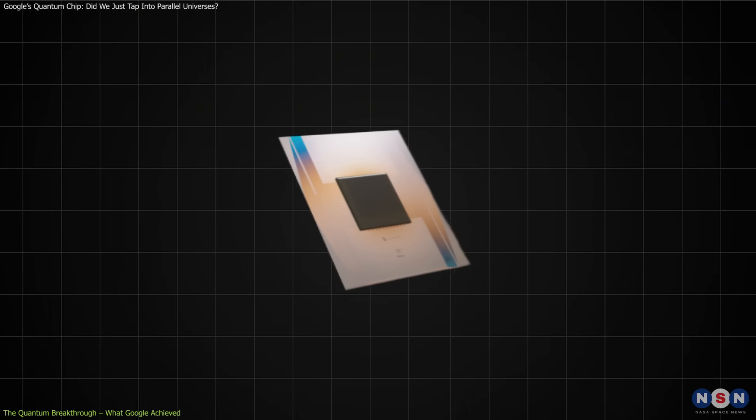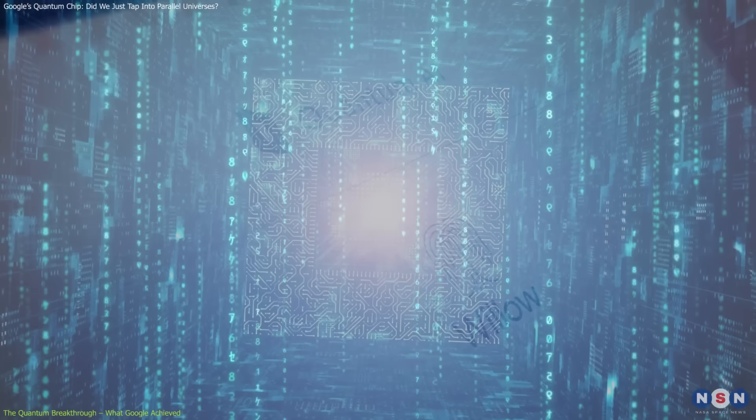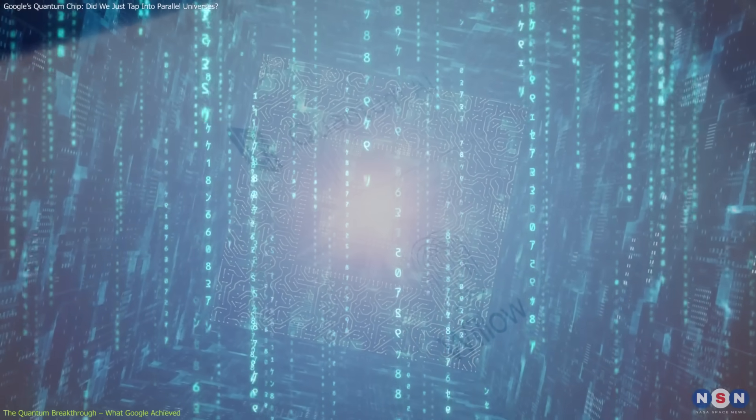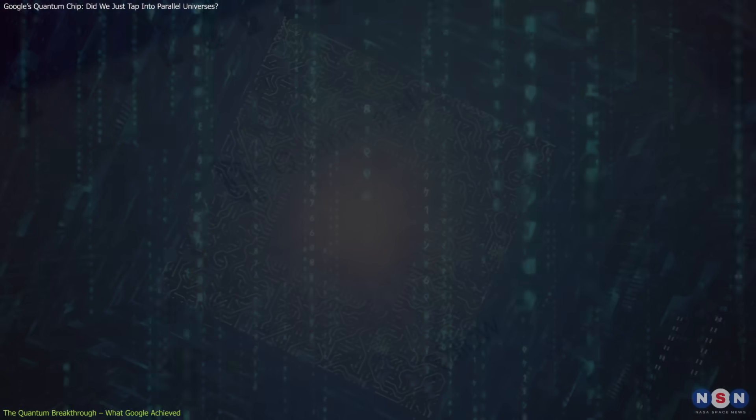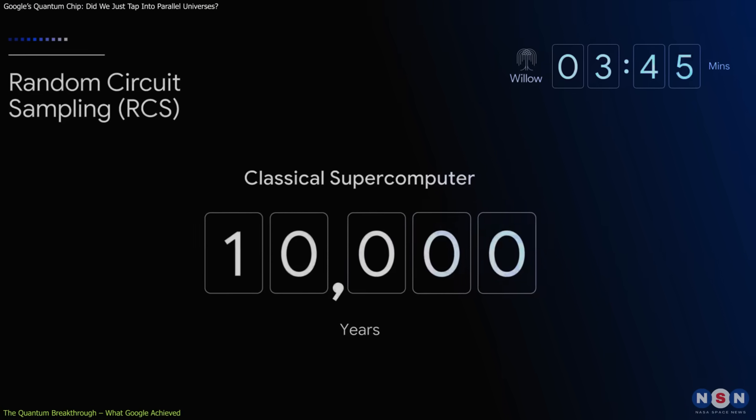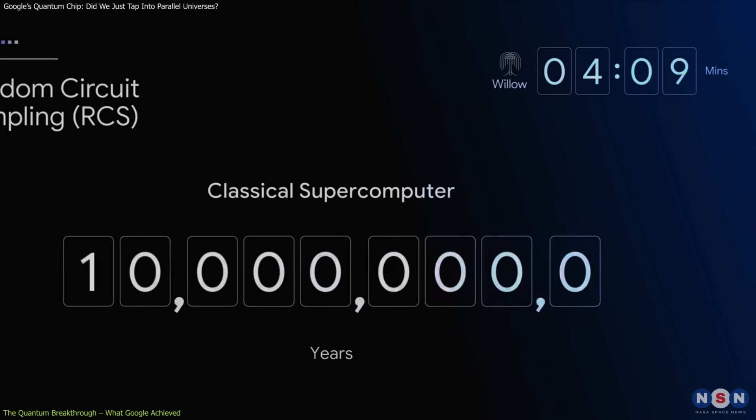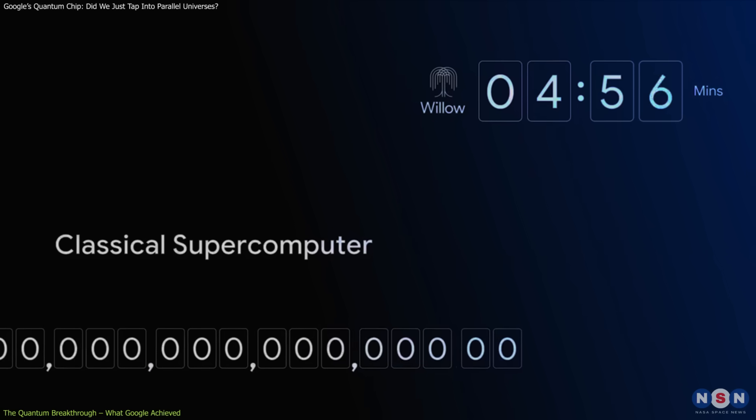Here's what happened. Willow was tasked with solving something called a random distribution benchmark. Essentially, it had to generate outputs based on extremely complex and entangled quantum patterns. Classical computers? Forget it. This task would take them 10 septillion years. That's a one with 25 zeros behind it. Willow did it in under five minutes.